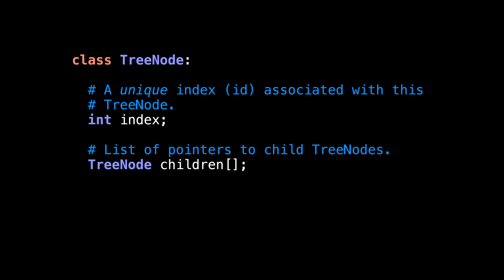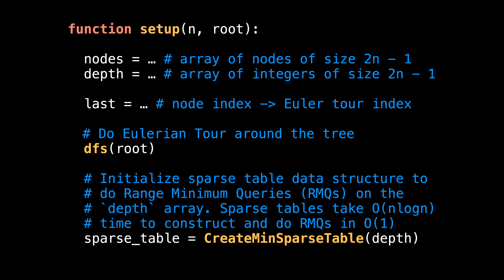First off, I'm going to define a tree node class which has two members. The first is a unique index associated with the tree node so that we can easily reference it. And after that, a list of pointers to the child tree nodes of this tree node. Before we can start doing lowest common ancestor queries, we need to do some pre-processing and this is handled by the setup function. The setup function takes as input the number of nodes in the tree and a pointer reference to the tree's root node. First, allocate some memory for the nodes and the depth array and also initialize the last map. This is the map that maps node indices to Eulerian tour indices.